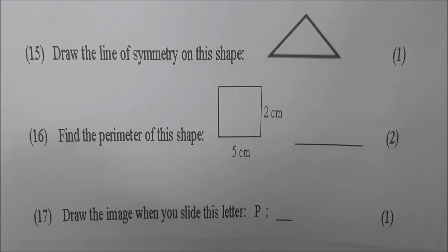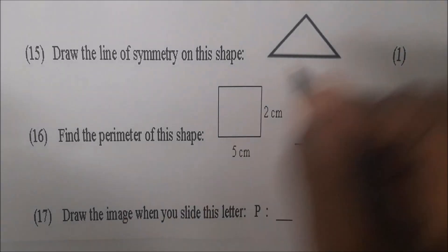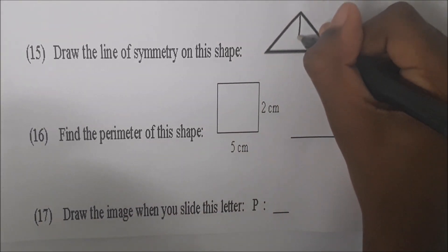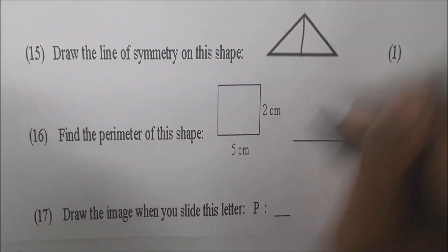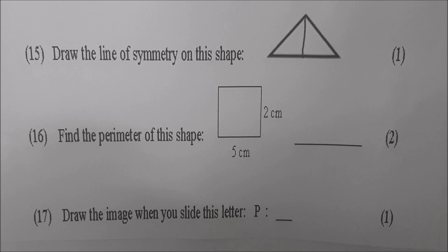Okay Sky, read number fifteen. Draw the line of symmetry on the shape. And where would you draw that? In the middle. Very good. That line would divide it in half. So the line of symmetry divides the shape in half, and that's exactly what she did, drawing it straight down the middle.